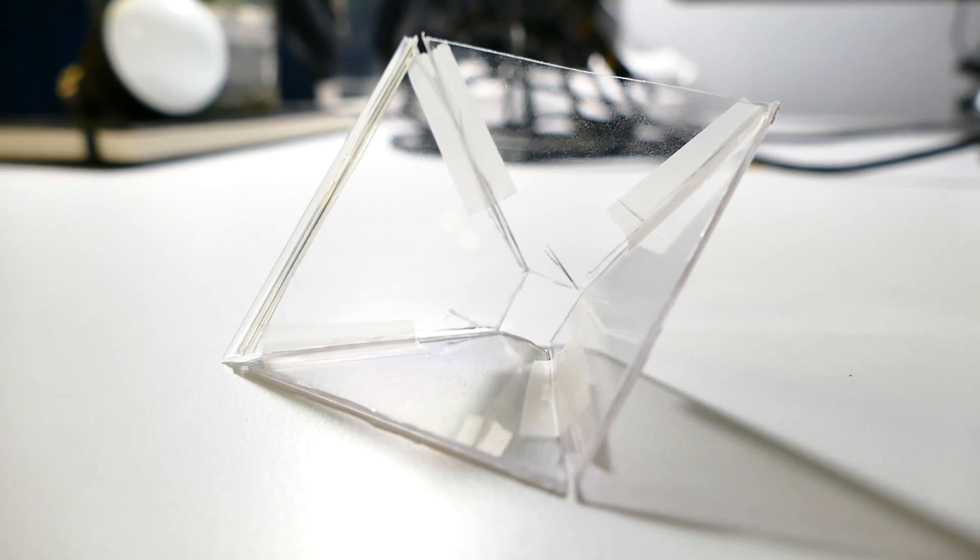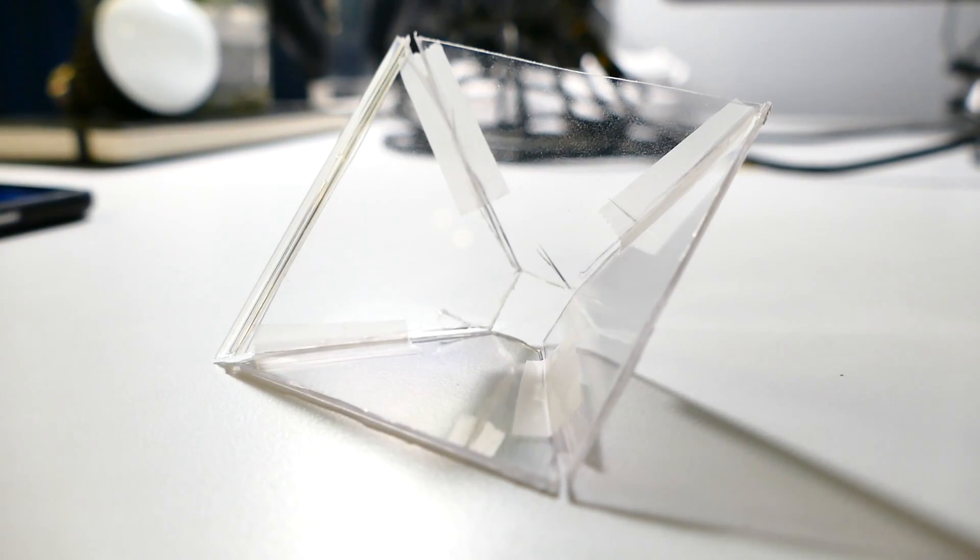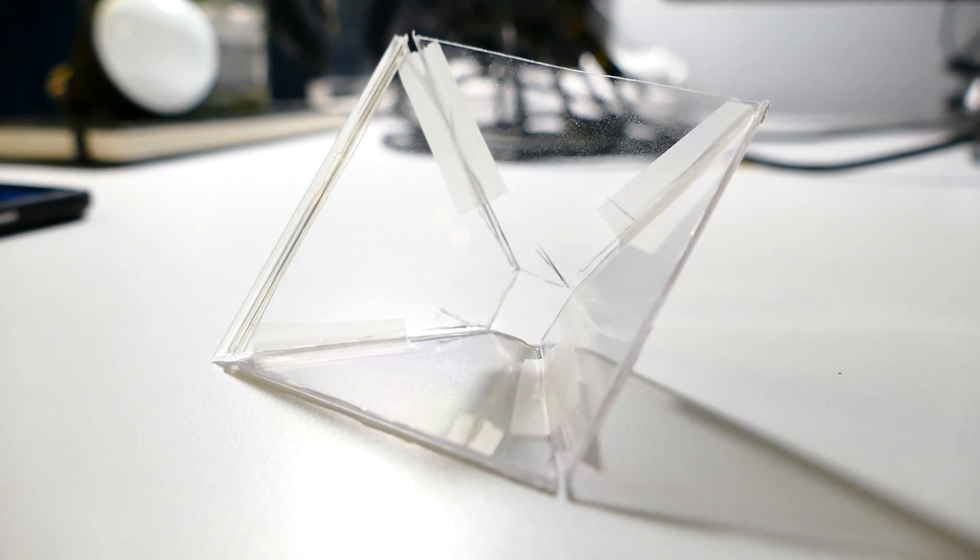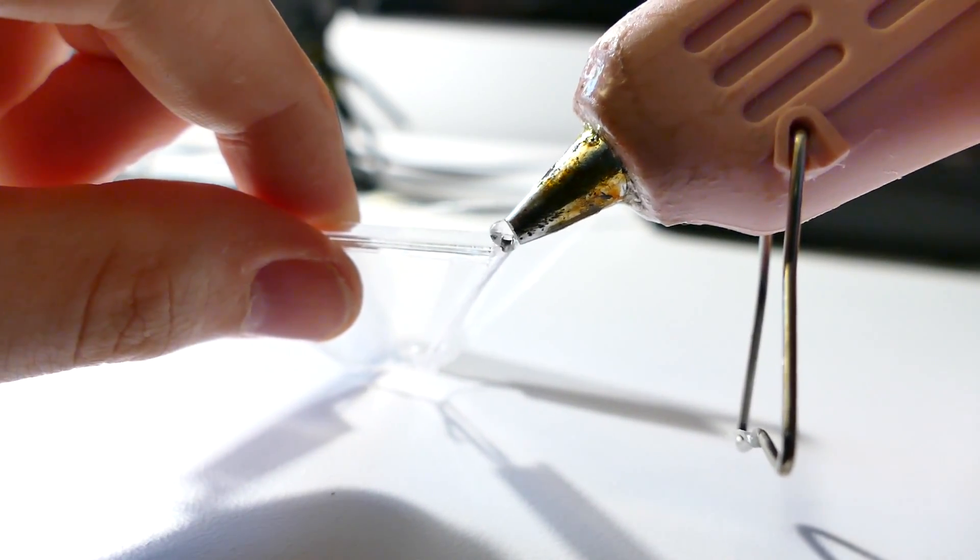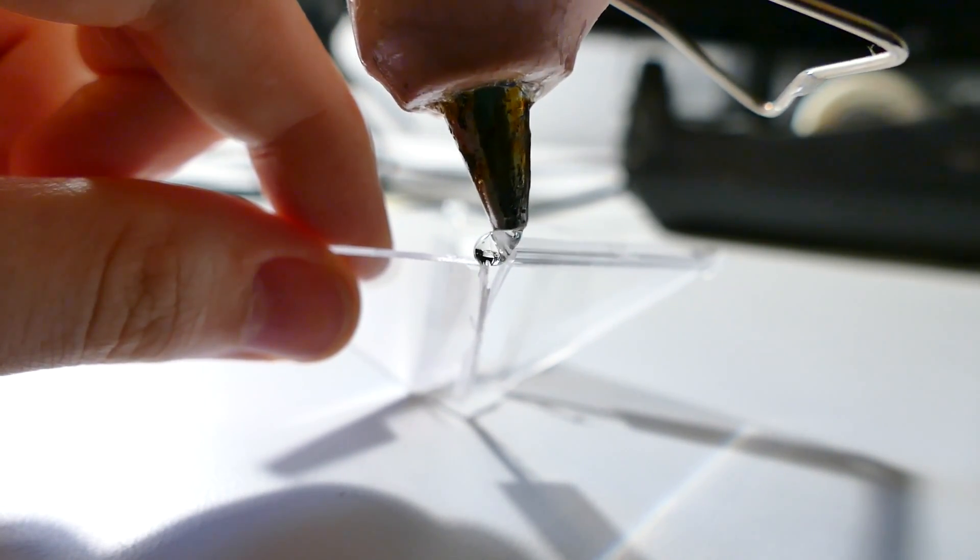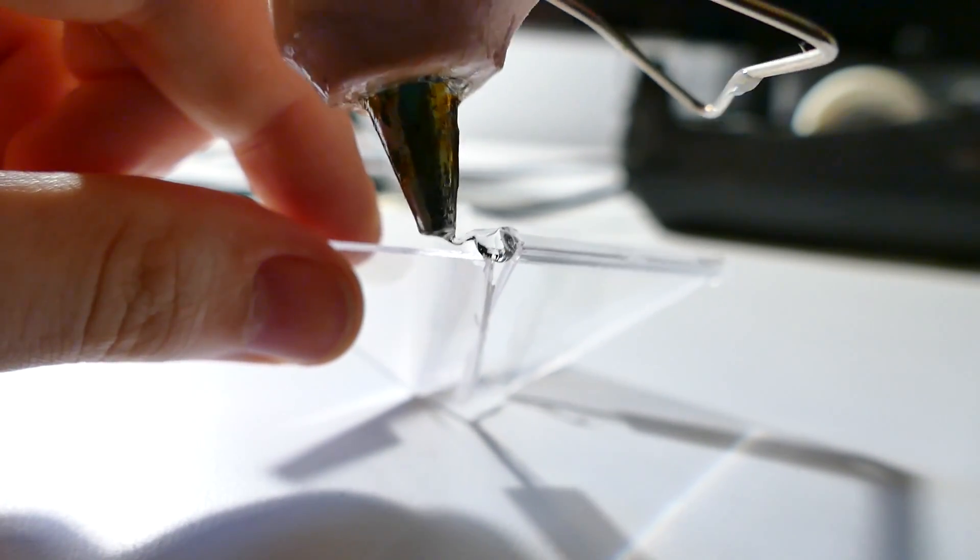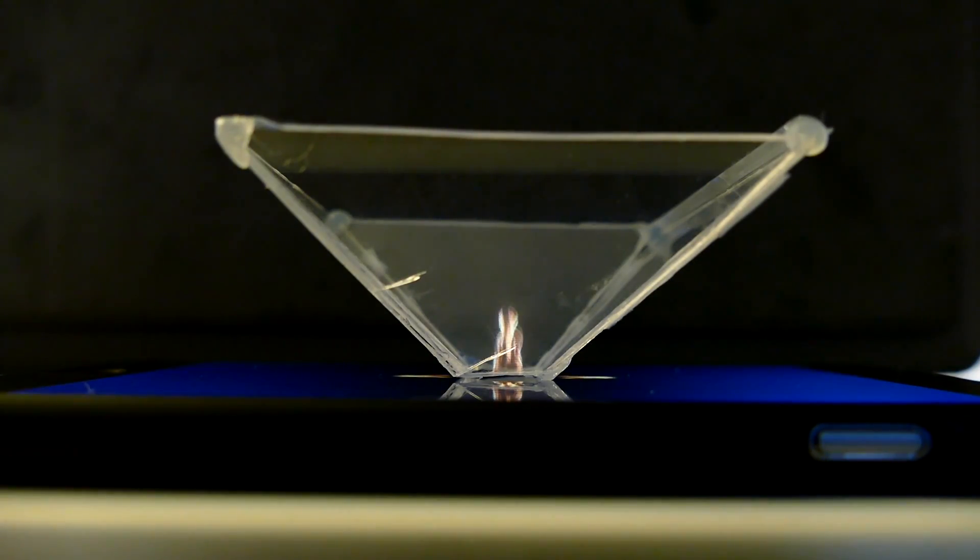Once you have all four cut out, place them together in this pyramid shape. You can use tape to keep them together, which is what I did at first, but I also used a hot glue gun for a more seamless looking design. Once you have all four pieces attached, you now have your hologram projector. Put it on your iPhone and let the magic work.